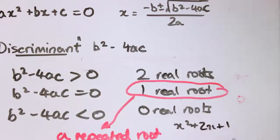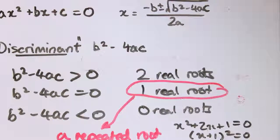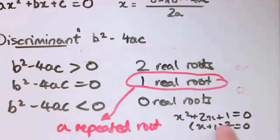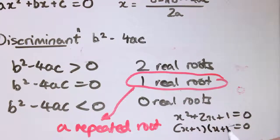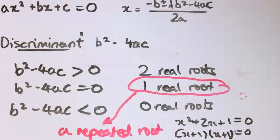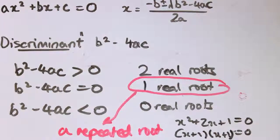Which we could write as x plus 1 squared equals 0. So the reason we call it repeated is that when you try to factorize it, that factor appears twice because it's x plus 1 times x plus 1, so it's kind of repeated in that expression. So two real roots, one repeated root, or no real roots are the three possibilities for a quadratic equation.